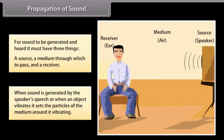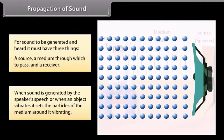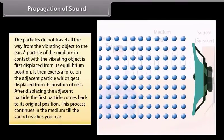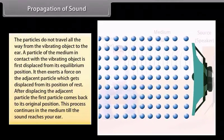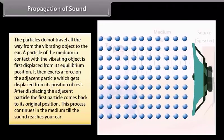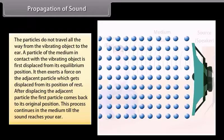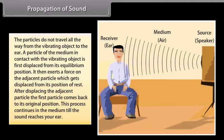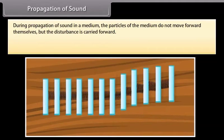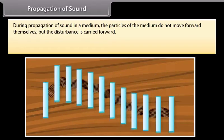When a sound is generated by the speaker's speech or when an object vibrates, it sets the particle of the medium around it vibrating. The particles do not travel all the way from the vibrating object to the ear. A particle of the medium in contact with the vibrating object is first displaced from its equilibrium position. It then exerts a force on the adjacent particle which gets displaced from its position of rest. After displacing the adjacent particle, the first particle comes back to its original position. This process continues in the medium till the sound reaches your ear.